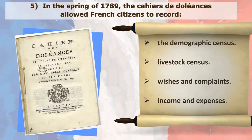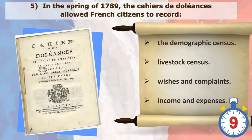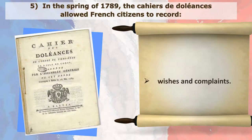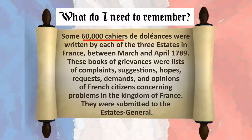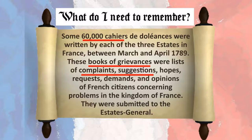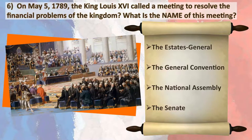In the spring of 1789, the cahiers de doléances allowed French citizens to record their wishes and complaints. Some 60,000 cahiers de doléances were written by each of the three estates in France between March and April 1789. These books of grievances were lists of complaints, suggestions, hopes, requests, demands, and opinions of French citizens concerning problems in the kingdom of France. They were submitted to the Estates General on May 5th, 1789.